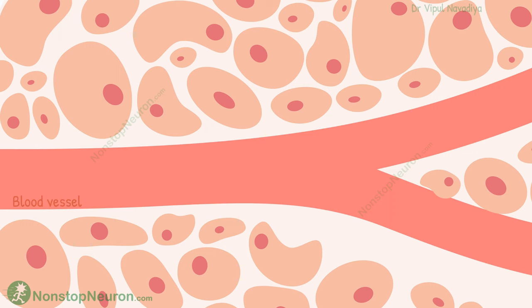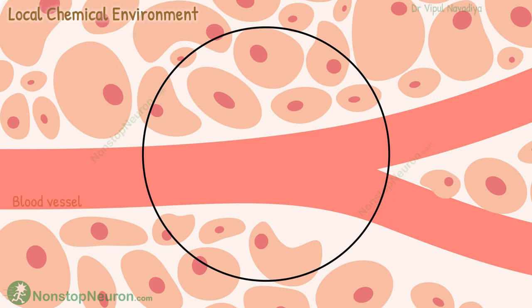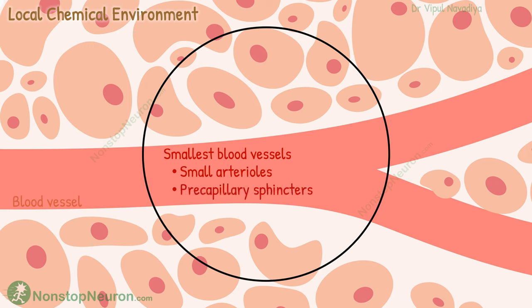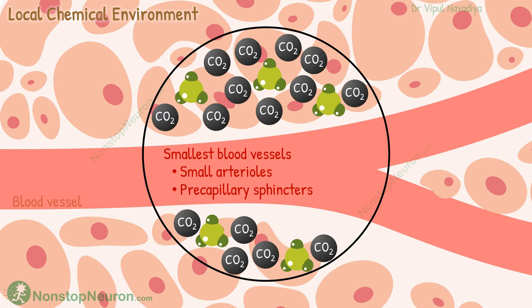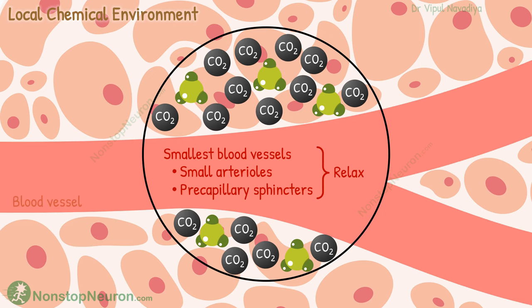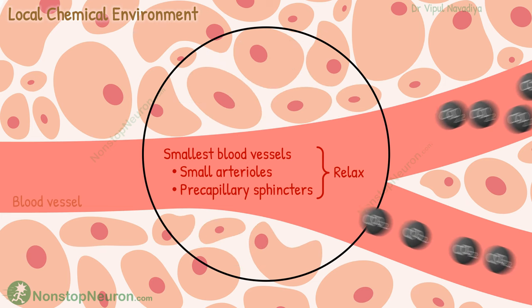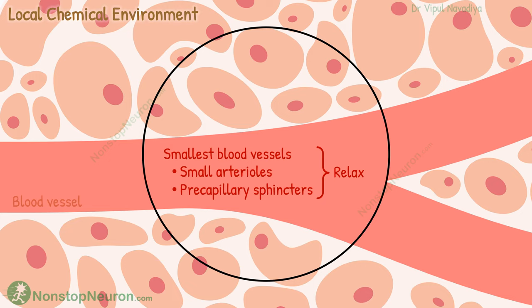Besides nerves and hormones, changes in the local chemical environment can also impact smooth muscle contraction. For example, the smallest blood vessels, such as small arterioles and precapillary sphincters, lack a direct nerve supply. Instead, they respond to local chemical changes. If there is a lack of oxygen or an excess of carbon dioxide in the surrounding environment, the smooth muscles in these vessels will relax. This relaxation causes the vessels to dilate, increasing blood flow, which resolves the local issue by bringing more oxygen and clearing the excess carbon dioxide.